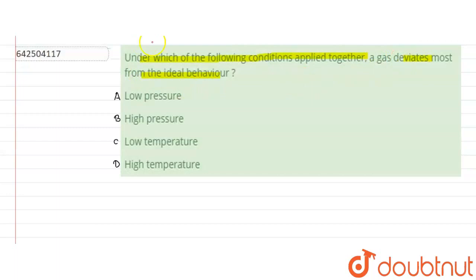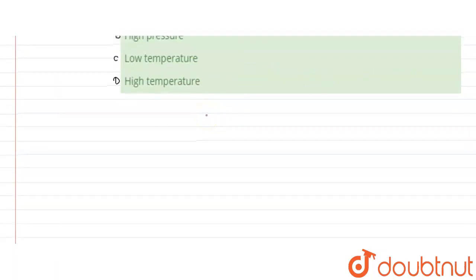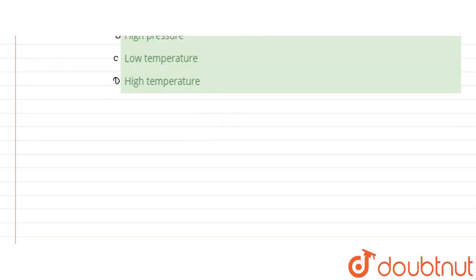So we know that an ideal gas follows the ideal gas equation which is, let me write it as, PV equals nRT.